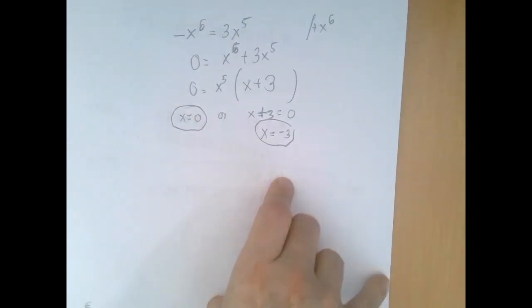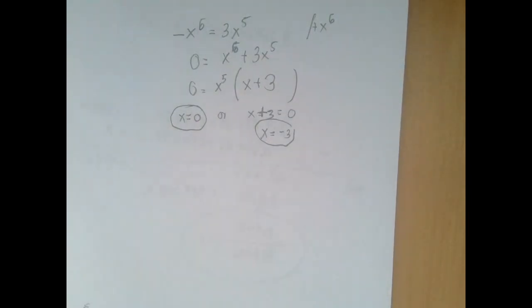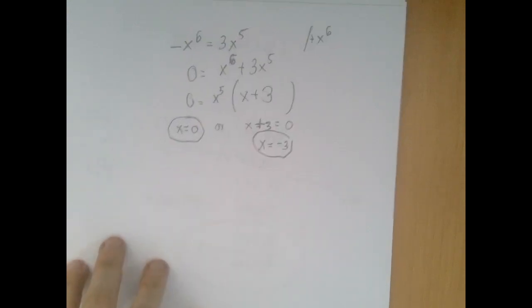So even though this expression is of degree six, we only have two solutions. It is a fact that an equation cannot have more solutions than its degree, but it can have less, and this is an example for that.